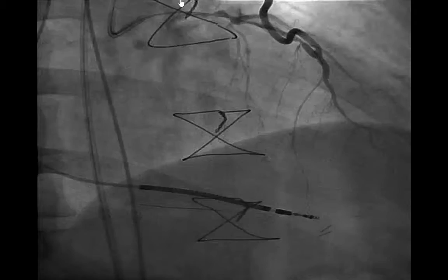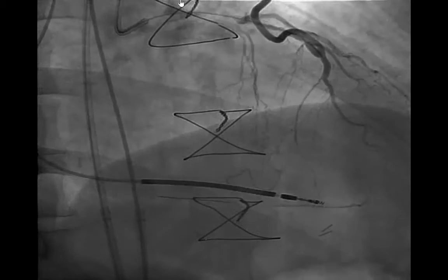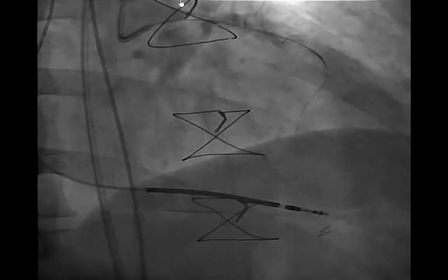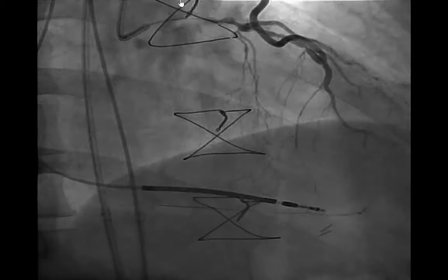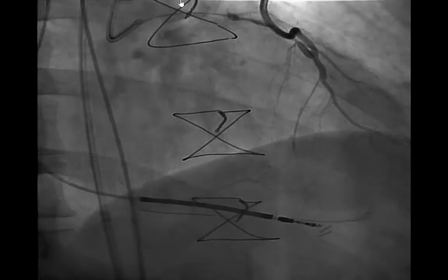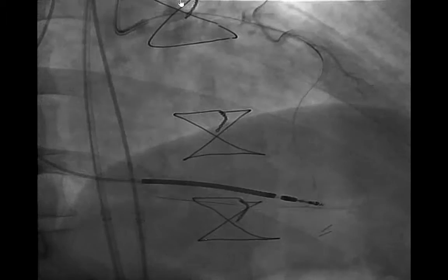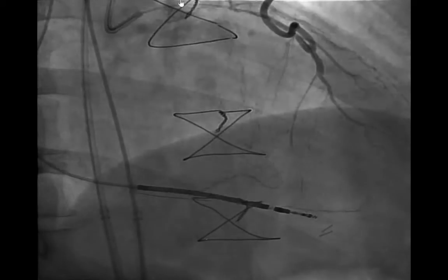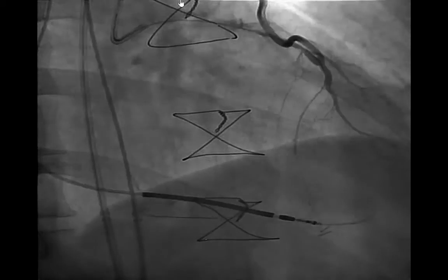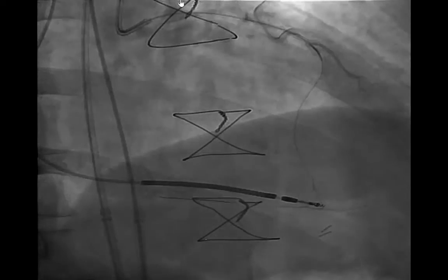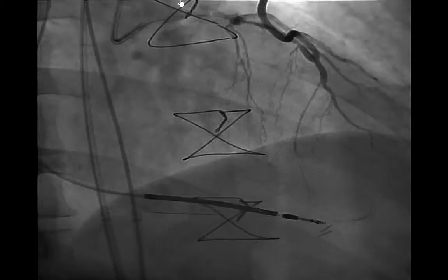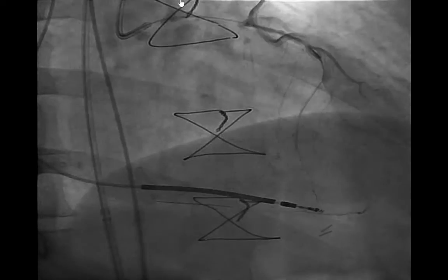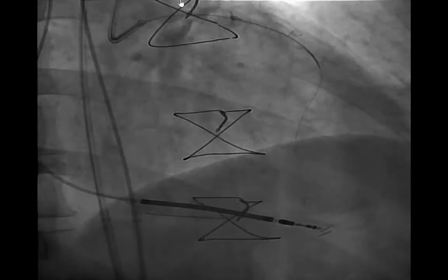You can see from the diagnostic angiogram that we have two guides — a guide going to the mammary and a guide going through the native left main. The LAD was open, so we just used the mammary to guide us initially. We brought our catheter down the native LAD so that we didn't have to take a chance on injuring the mammary, and we decided to initially get some progress retrograde.